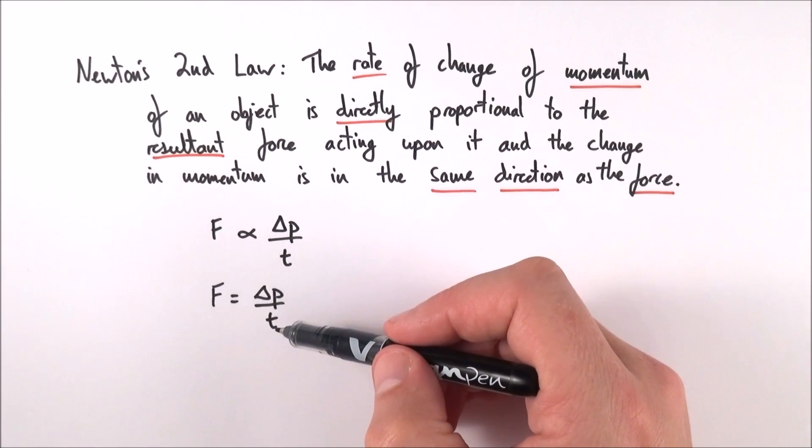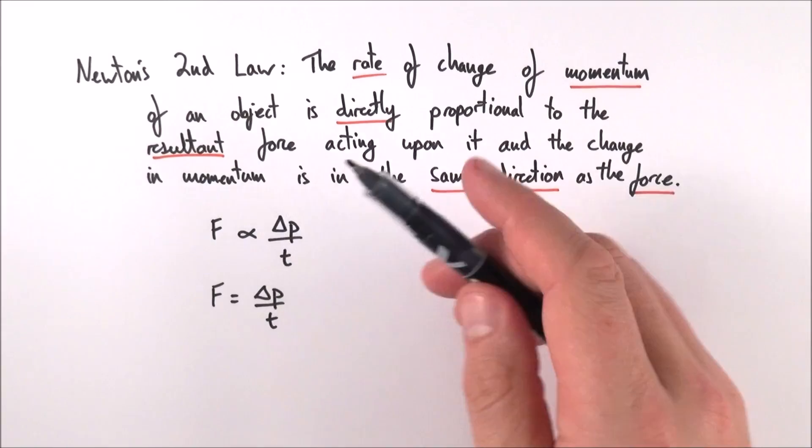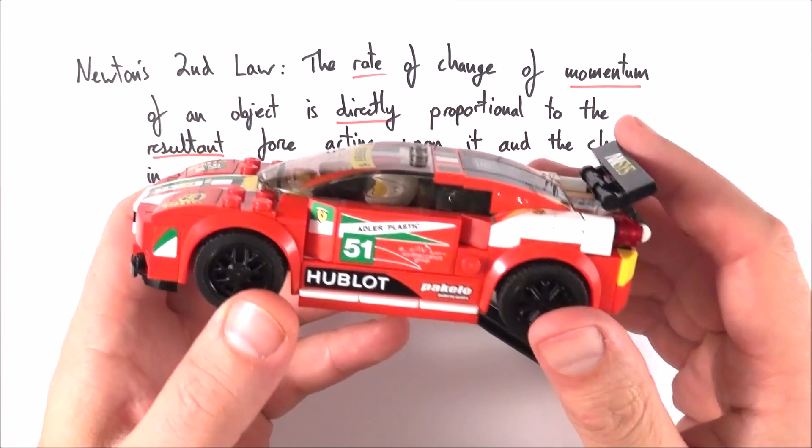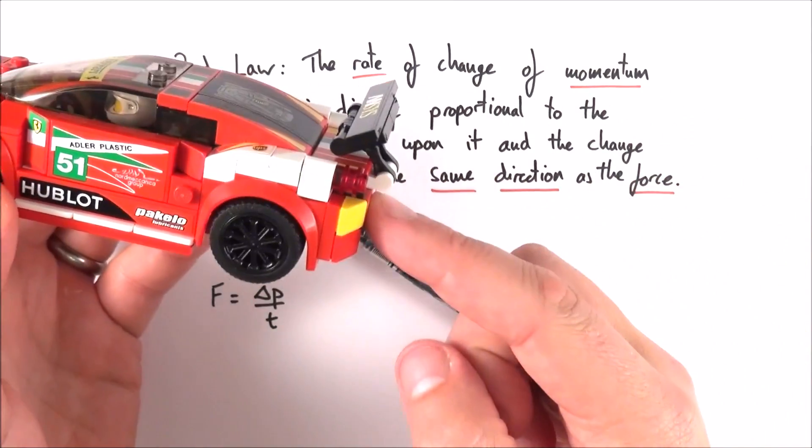So force in newtons, momentum in kilogram meters per second, and time in seconds. So effectively, if you want to change the momentum of an object, perhaps make it go faster, then what you need to do is apply force on that object. It will accelerate, and therefore its momentum will change.